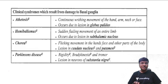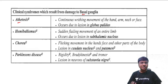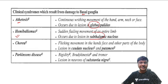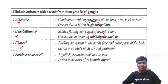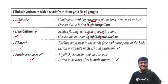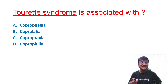Regarding basal ganglia involuntary movements: athetosis has its site of pathology at the globus pallidus; hemibalismus at the subthalamic nucleus; chorea at the caudate nucleus and putamen; and in Parkinson's disease, tremors result from pathology at the substantia nigra.